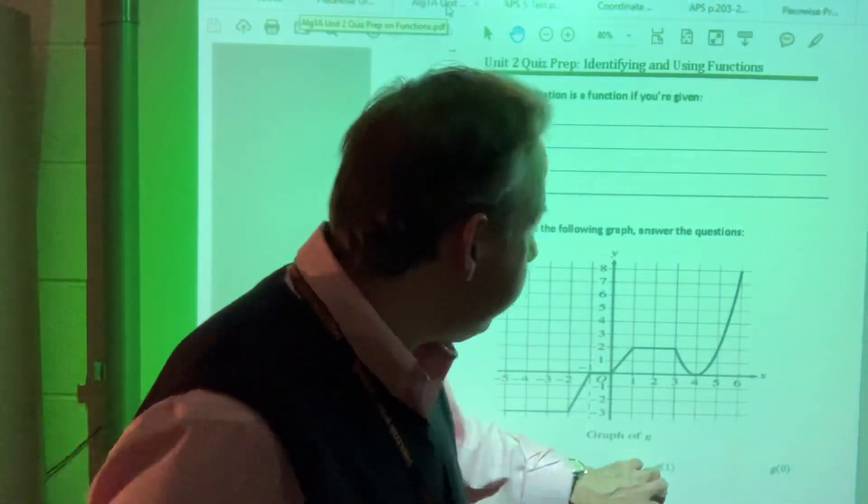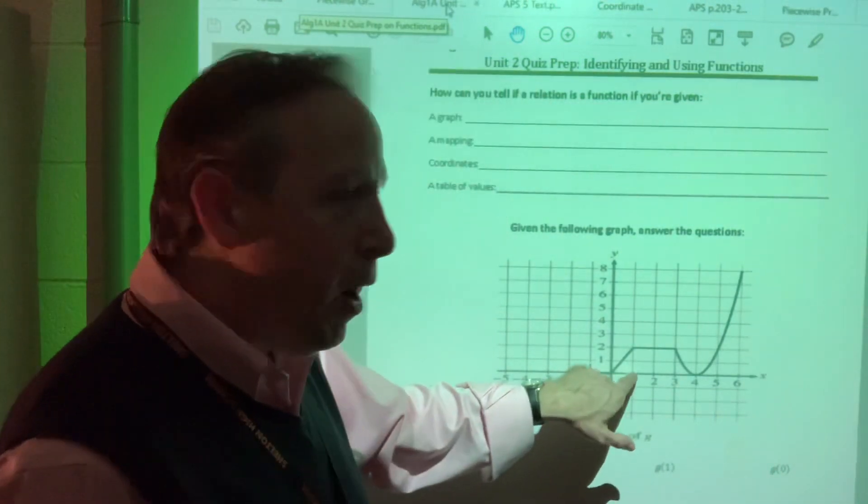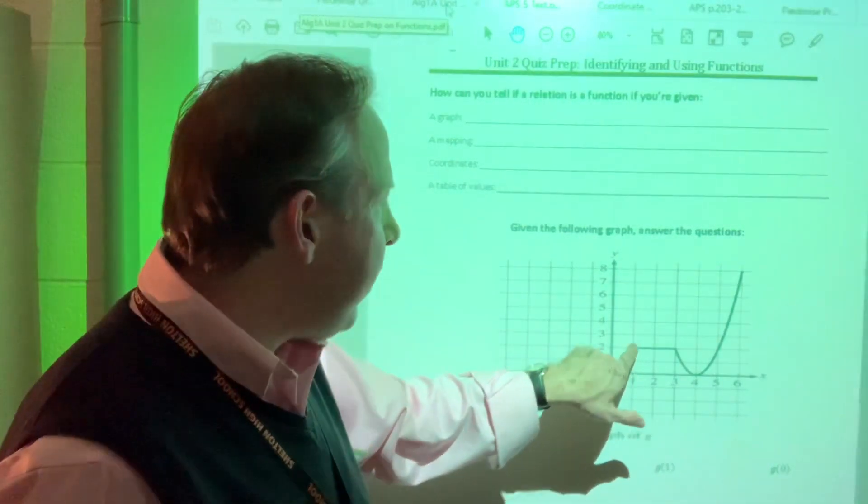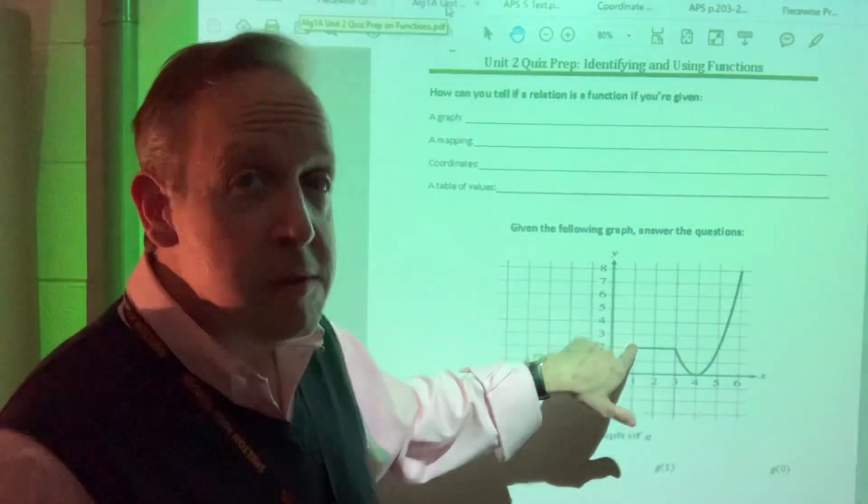What is g of one? Well, when the input is one, when the x is one, the y value, the output is at two. So the answer is two.